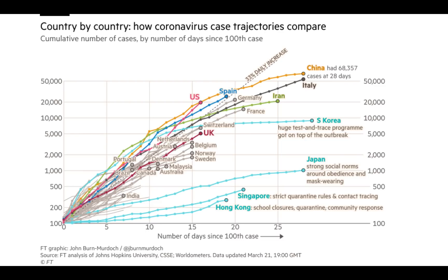Country by country, coronavirus trajectories are roughly all the same — everybody's growing at a similar rate. Canada is right near Australia. The United States has really taken off. India is now on the graph. Hong Kong, Singapore, Japan, and South Korea are all doing well. And perhaps Iran's starting to tail off as well.